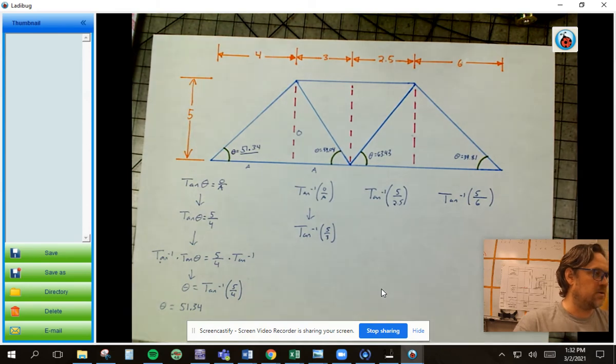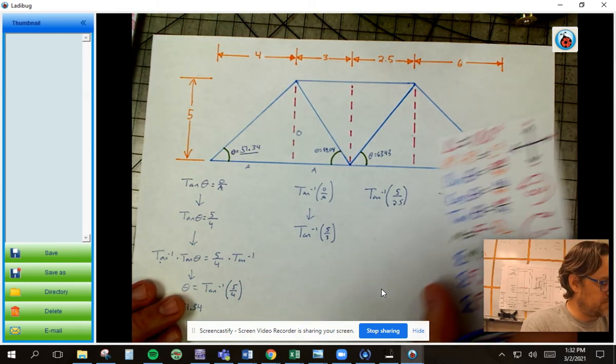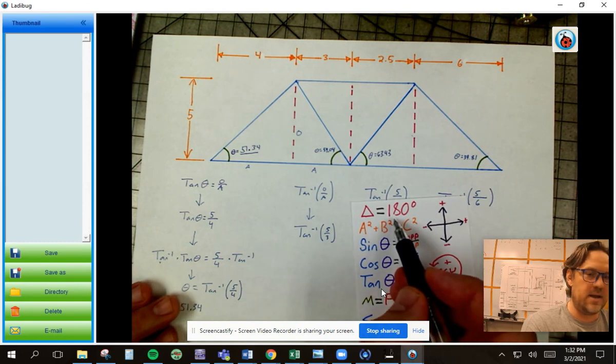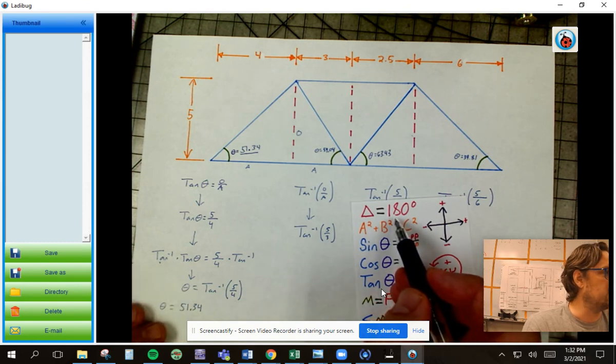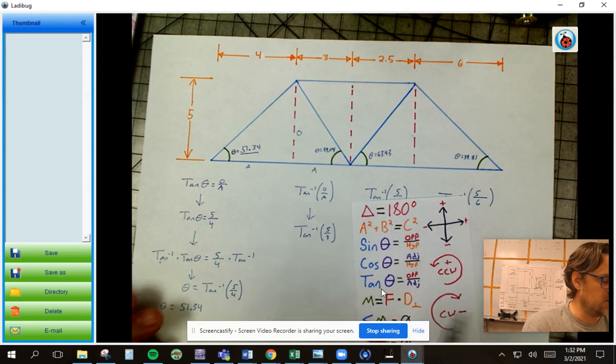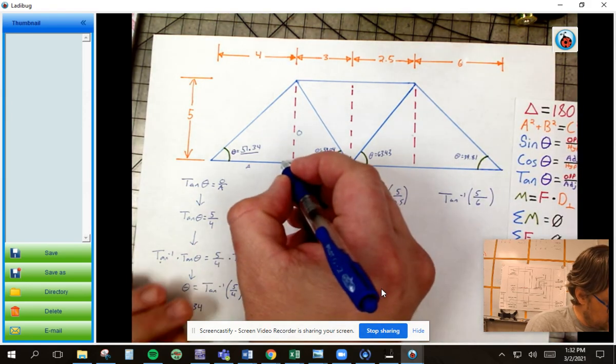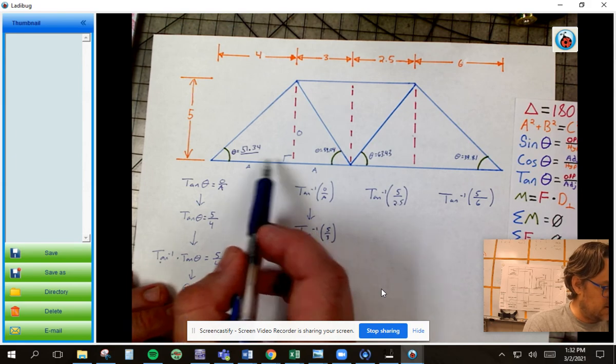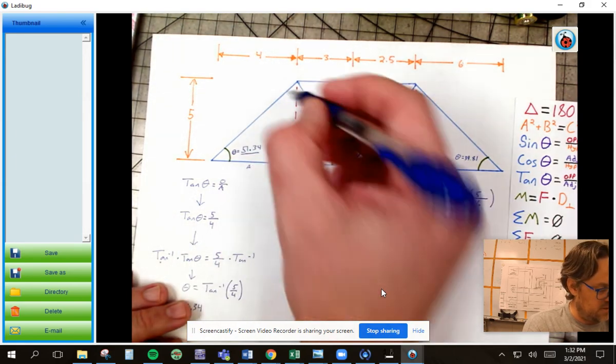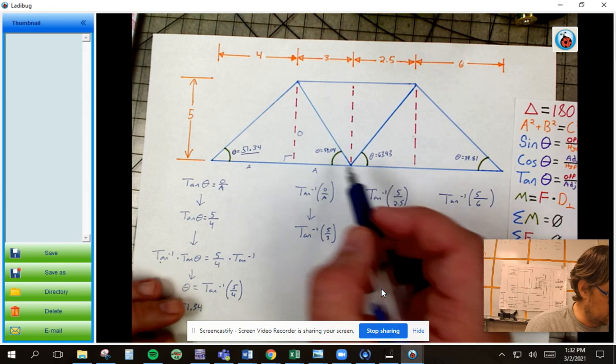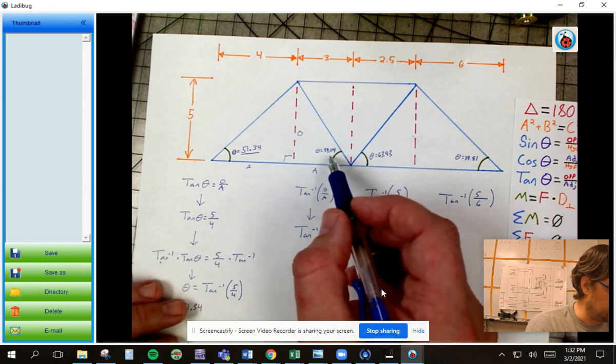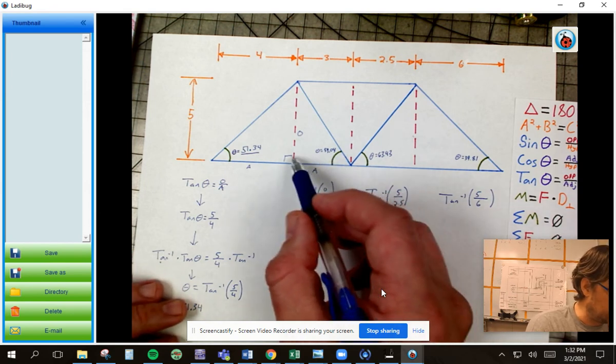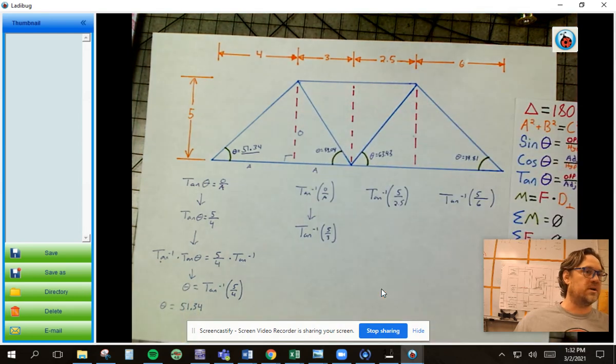Once I get those four angles, I can just use this guy right here to find the rest, right? So if I look at this and I know that this is 90, so 180 minus 90 minus 51.3 will give me that one. 59.04, you know, 180 minus 59 minus 90 will give me this angle, so forth. And I can work the rest of them pretty easily.